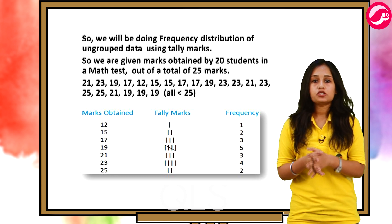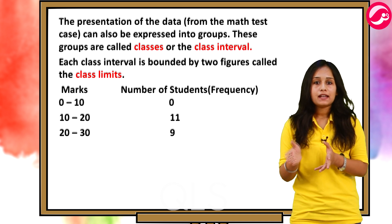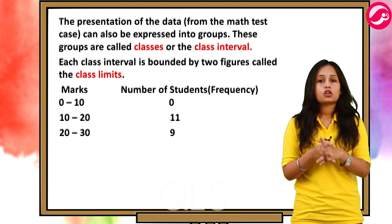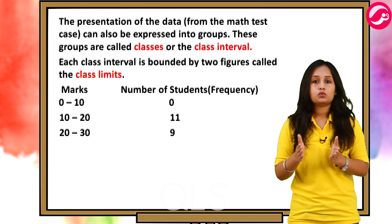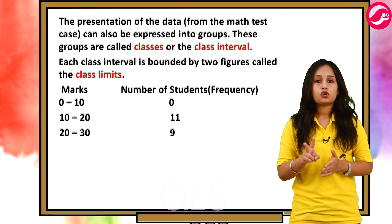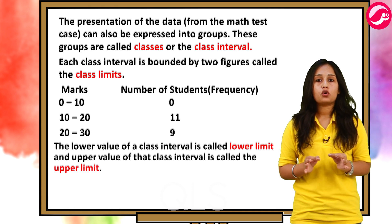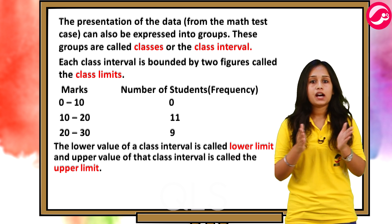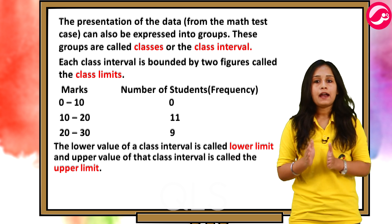Now, let us talk about the frequency distribution of grouped data. The presentation of the data from the math test case can also be expressed into groups. These groups are called classes or class intervals. Each class interval is bounded by two figures called the class limits. Now, the lower value of a class interval is called lower limit and upper value of that class interval is called the upper limit. Thus, each class interval has lower and upper limits.